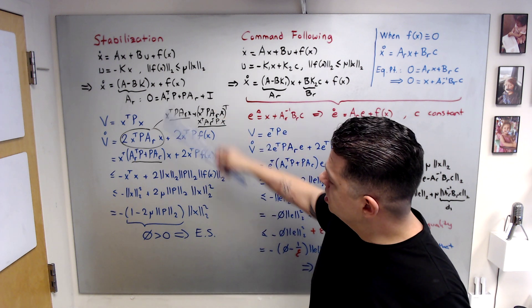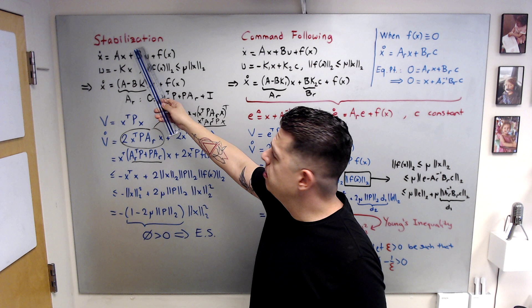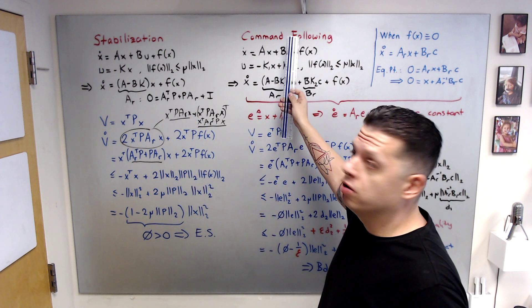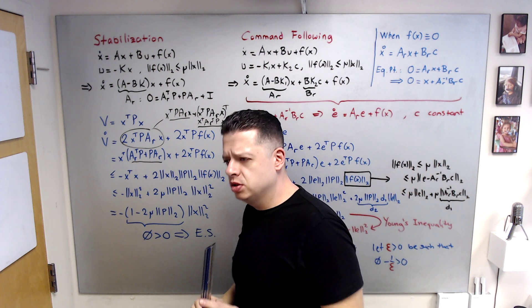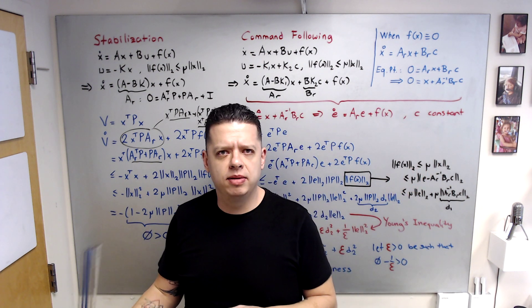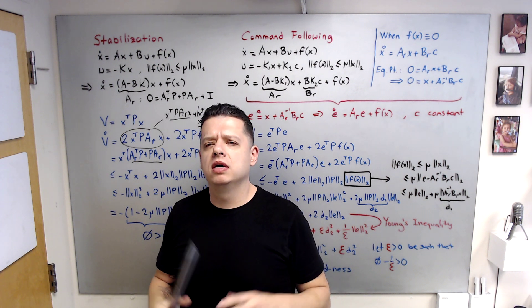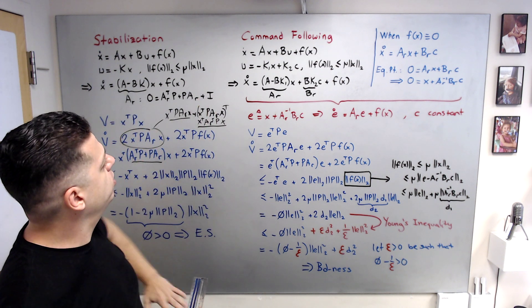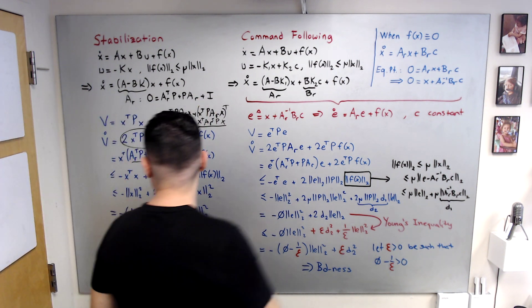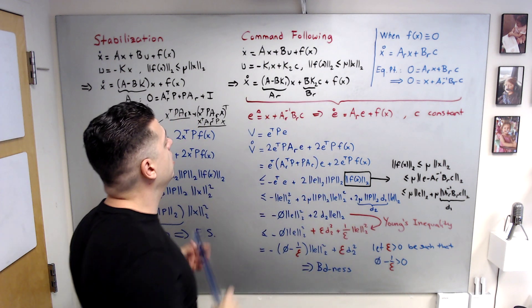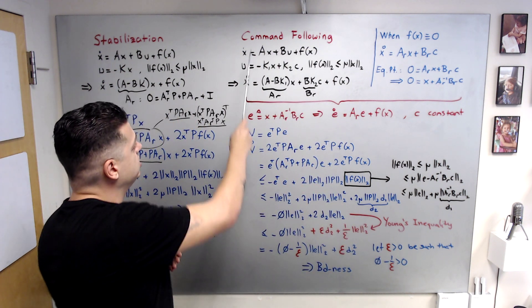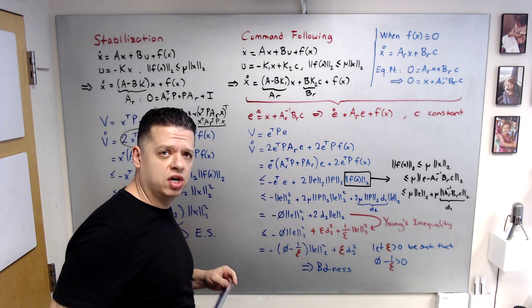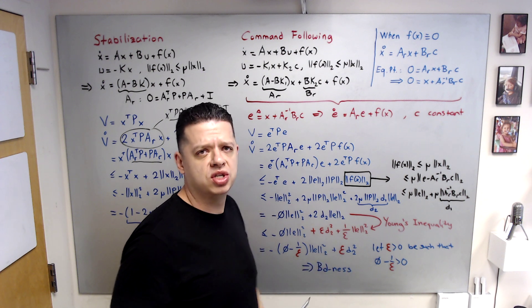We can get exponential stability for the stabilization problem, but this property will be lost for the command following problem — uncertainties affect stabilization and command following differently. Now jumping to the command following problem: we have the same system and a K1*x + K2*c controller structure, though other structures can be used as well.